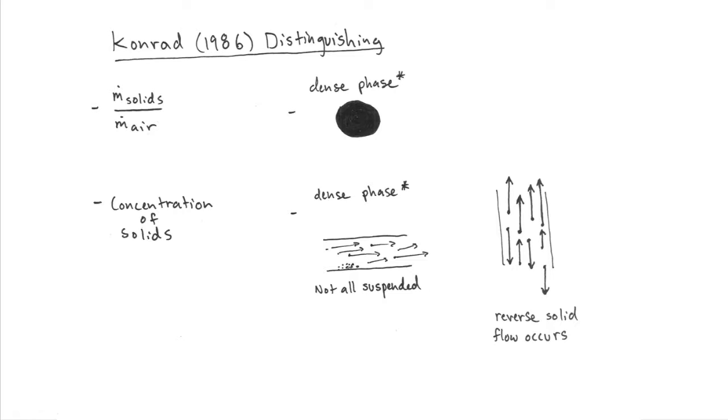In vertical pipes, there would be some reverse solid flow due to the fact that the force of pressure cannot overpower gravity.